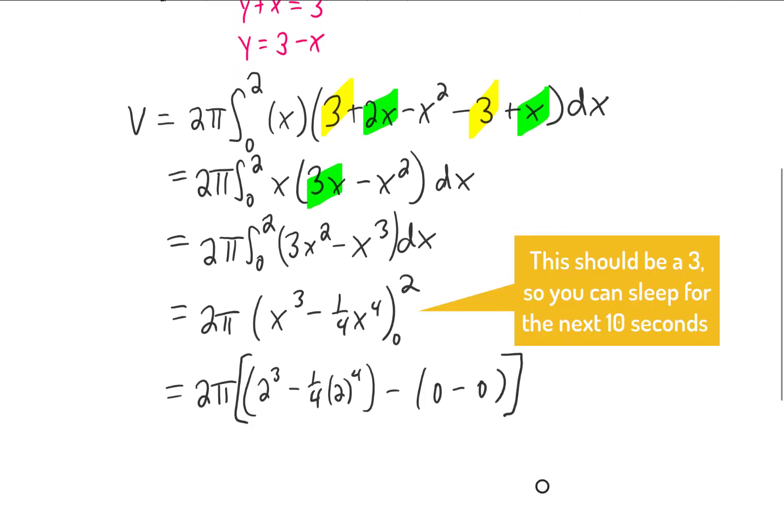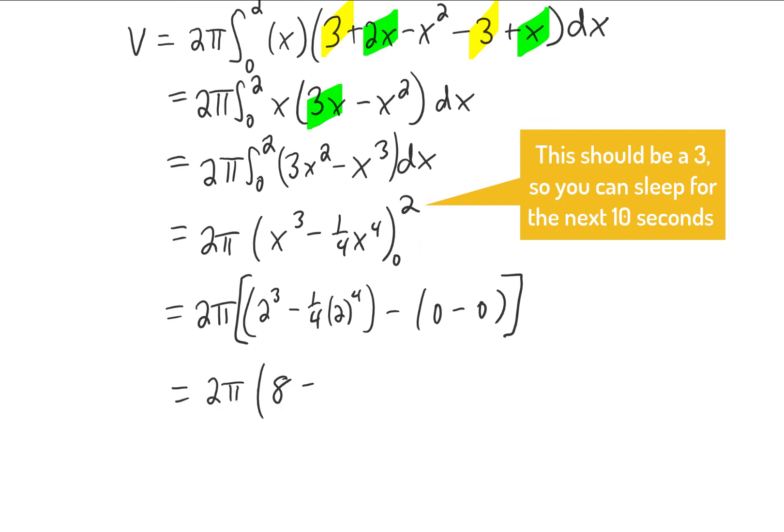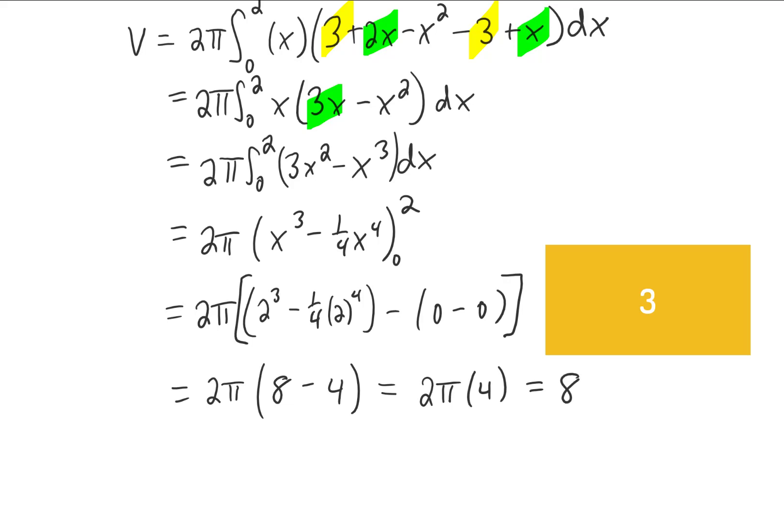Here we've integrated, and here we've plugged in the limits of integration. 2 to the 4th power is 16, multiply that by 1/4, and we get 4. 2π times 4, I'm getting a final answer of 8π.